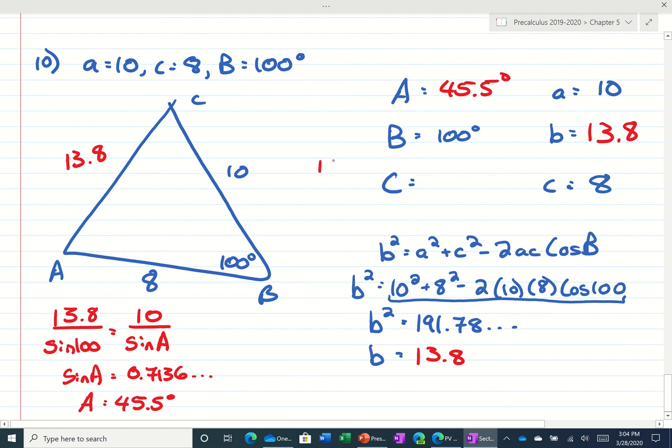To get angle C, we do 180 minus A and B. 180 minus 45.5 minus 100 gives me 34.5 degrees.